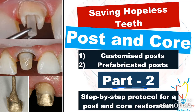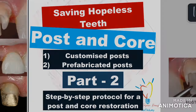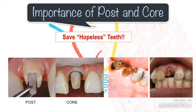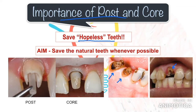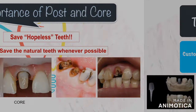The reason why post and core is extremely important is because you can save so many natural teeth. If you don't have the knowledge of this procedure, you would probably end up extracting a perfectly healthy tooth. For example, even a root piece can be restored with this procedure. However great implants are, there is nothing better than having a natural tooth in place.